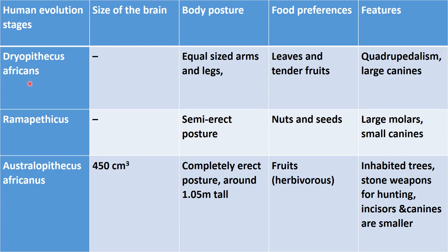First of all, Dryopithecus africanus was the first stage of human evolution. The size of brain is not mentioned — it is not confirmed from the fossils what the brain size was, so data is not found. Body posture: equal sized arms and legs were present. They ate leaves and fleshy, soft fruits. Other features include quadrupedalism — they used to walk on four limbs like gorillas — and they had large sized canines.